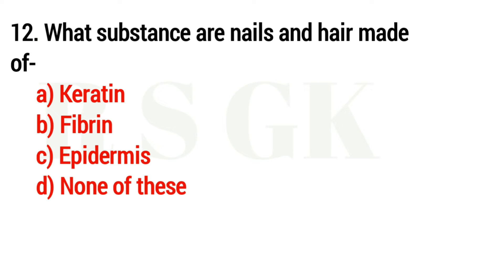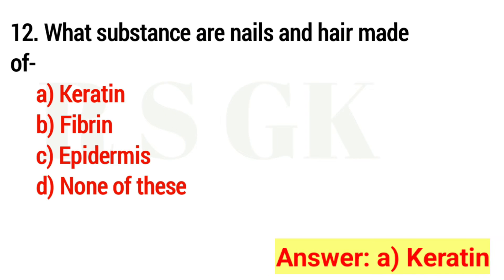Question 12. What substance are nails and hair made of? The answer is Option A: Keratin.